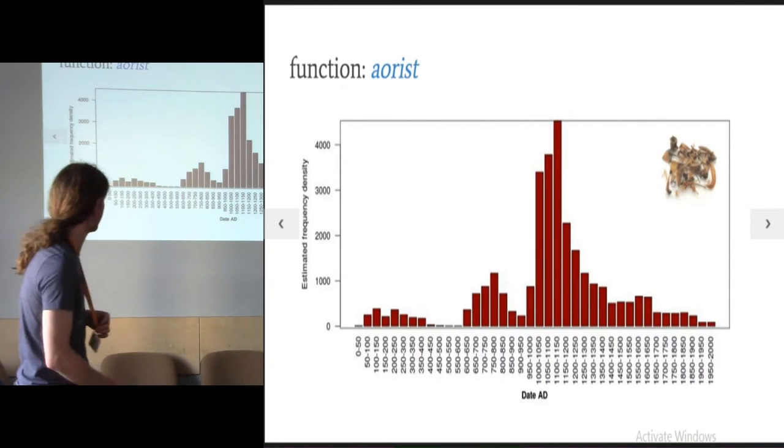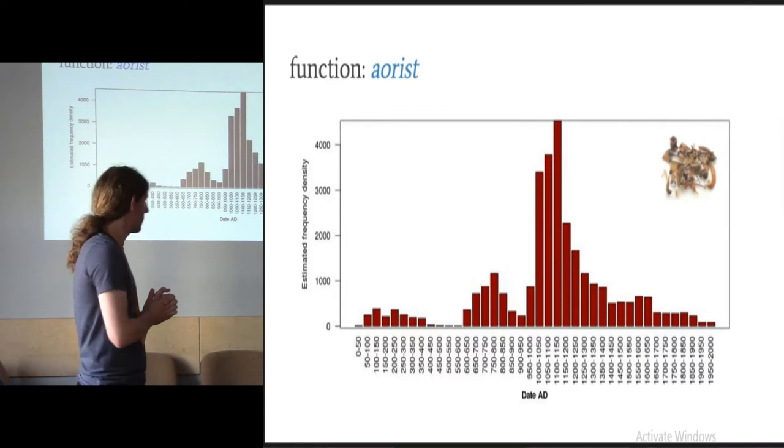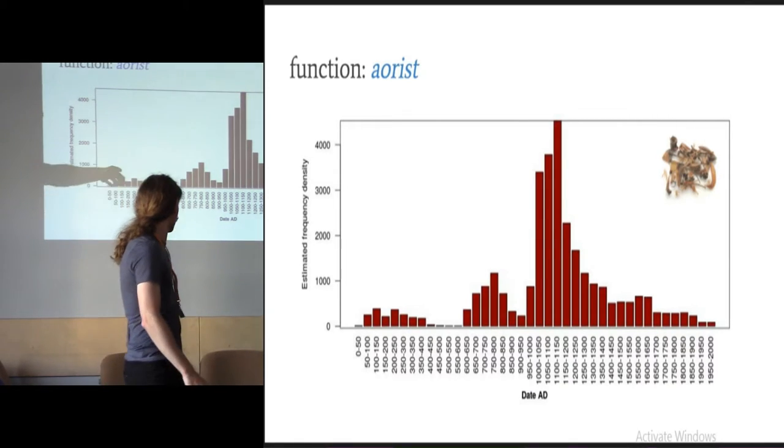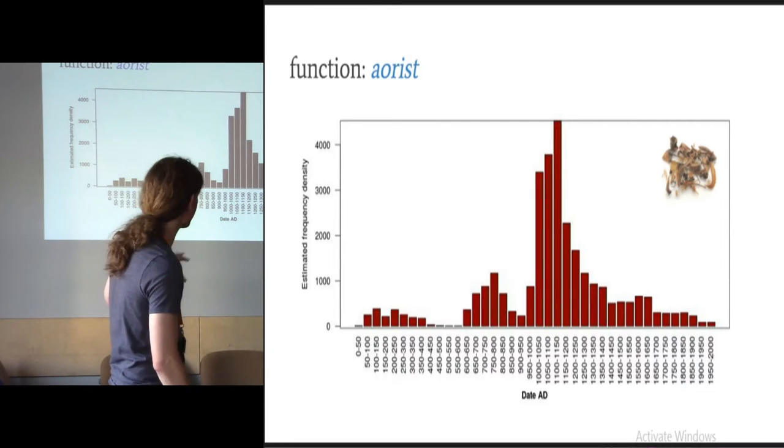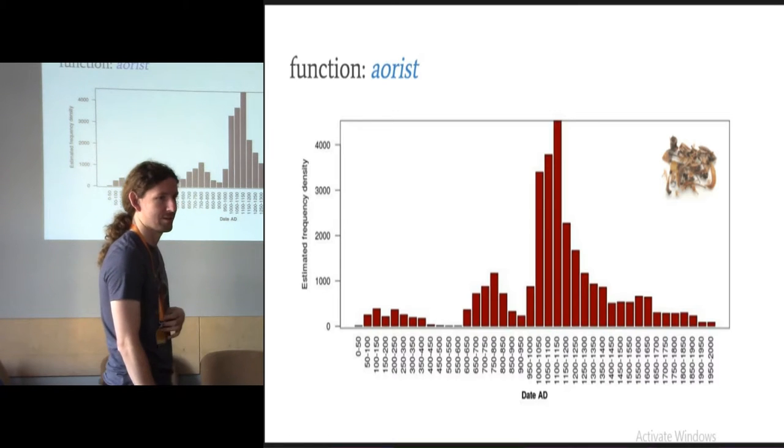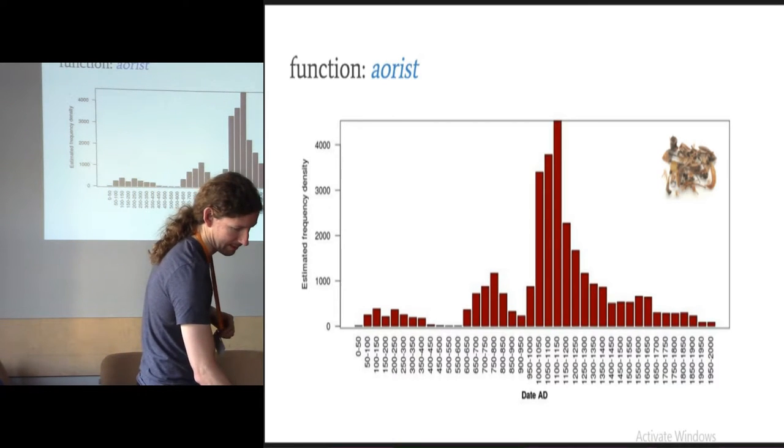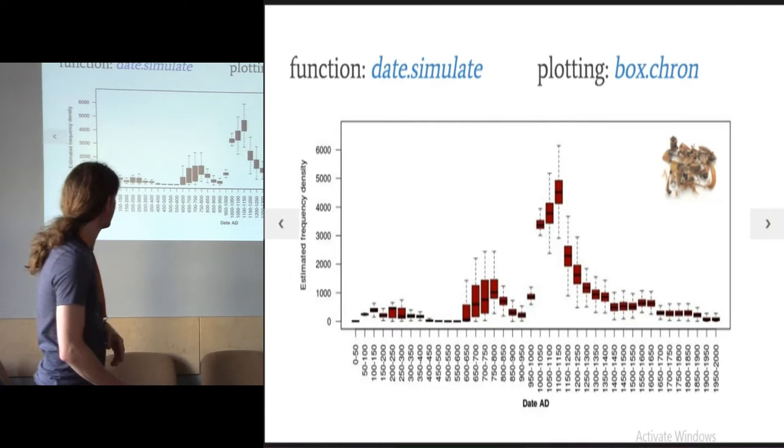This is what it looks like if you do aoristic analysis. Unsurprisingly, you find that there aren't many fish in London when there's nothing going on in London about here. The peak's where you'd expect them. Except that apparently London fades away after the medieval period and never became anything significant after that. But we'll come back to why that is in a moment.